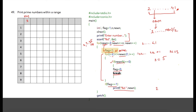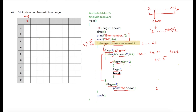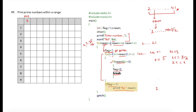In the second iteration, flag is reset to 1 and newn is 3. The inner for loop condition is 2 less than or equal to 3 divided by 2. Since both are integers, 3 divided by 2 evaluates to 1, so the condition is 2 less than or equal to 1, which is false. The inner loop doesn't execute, and since flag is still 1, newn which is 3 is printed.